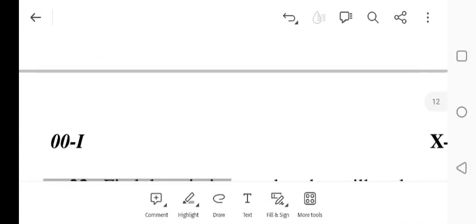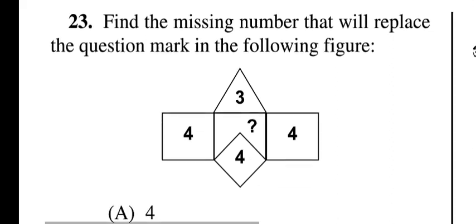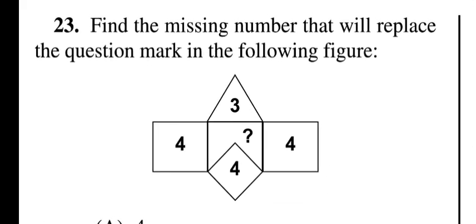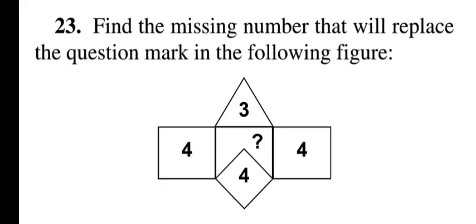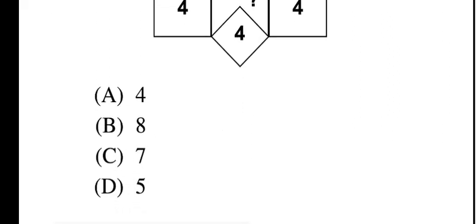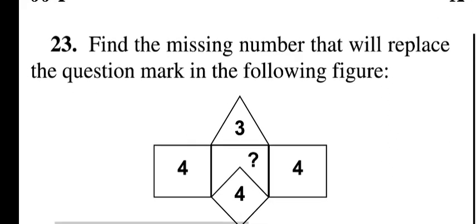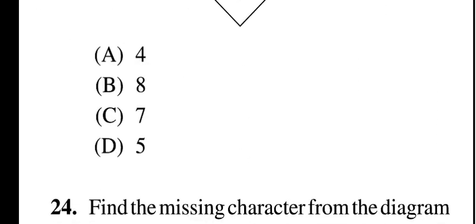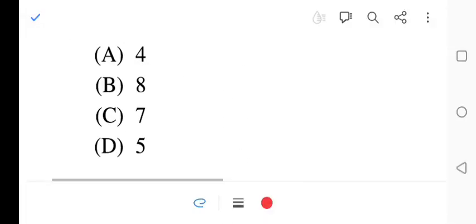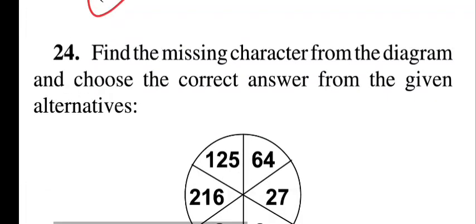Question twenty-three: find the missing number to replace the question mark in the figure — 4, 3, ?, 4, 4. Options: 4, 8, 7, 5. Question twenty-three, option D is correct: 5. Try to find out how.